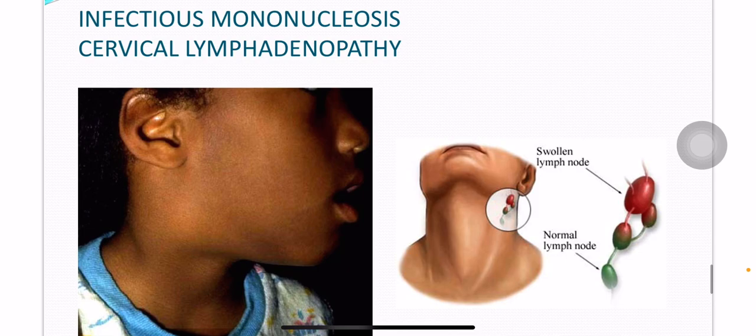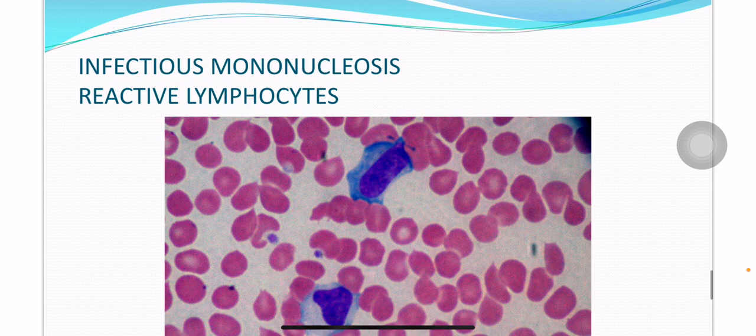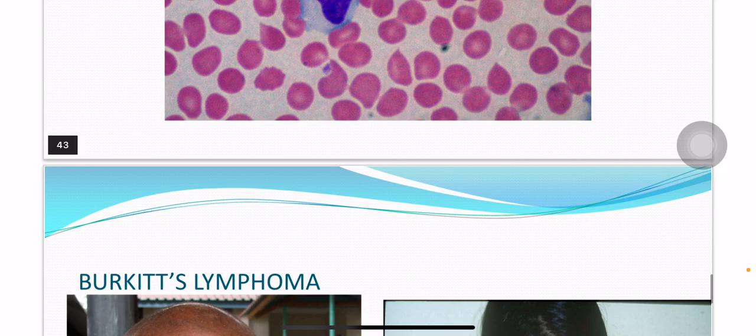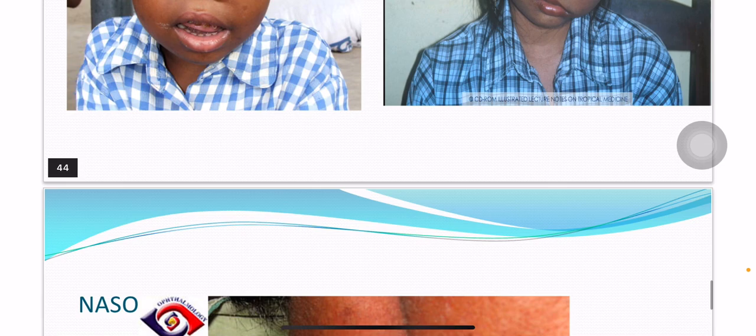Infectious mononucleosis: cervical lymphadenopathy. Reactive lymphocytes found in infectious mononucleosis in the peripheral blood. Burkitt's lymphoma. Nasopharyngeal carcinoma.